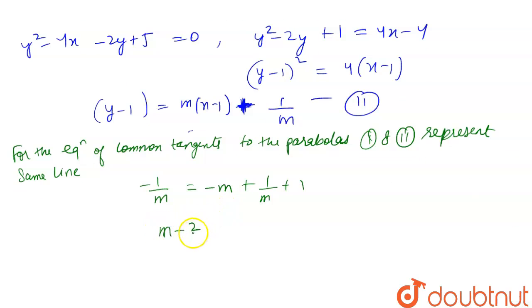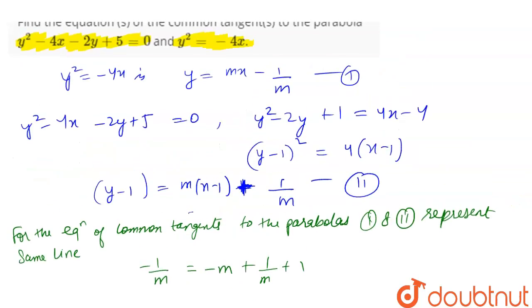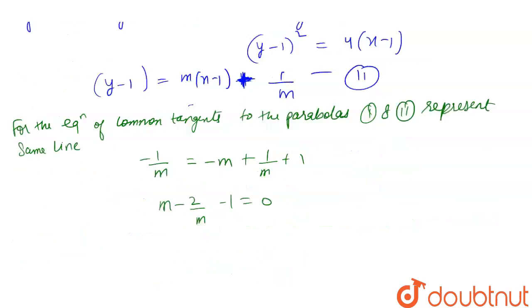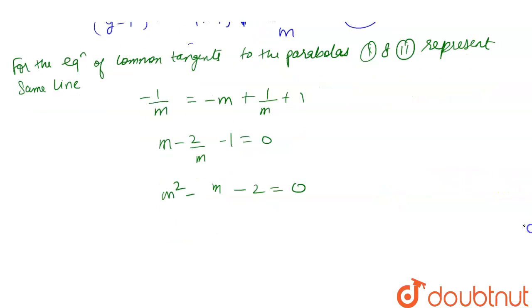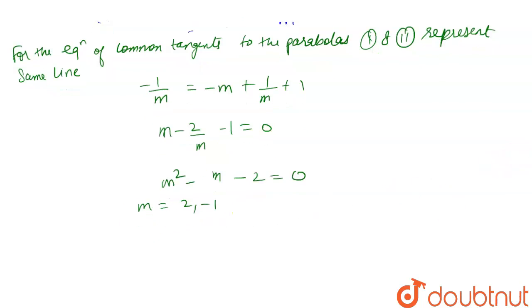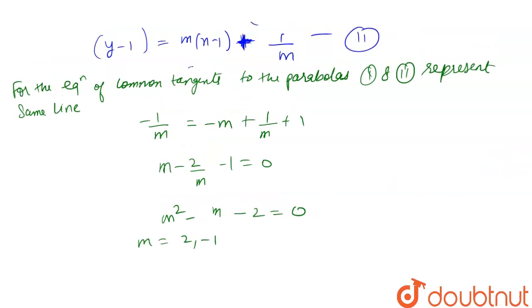Solving this condition gives m - 2/m. Taking terms to the LHS: m - 2 - m - 1 = 0, which expands to m² - 2m - m - 2 = 0. Solving this equation, we get the values of m as 2 and -1.